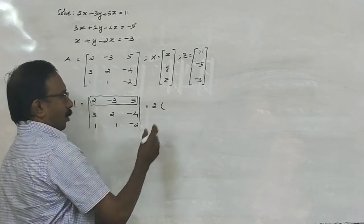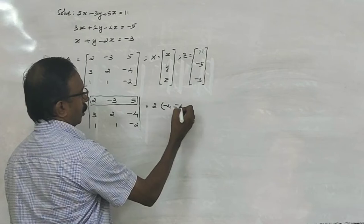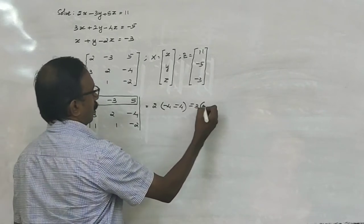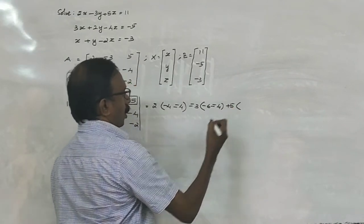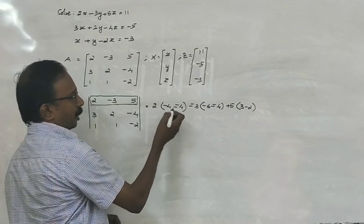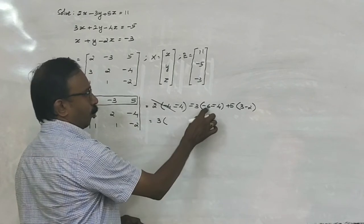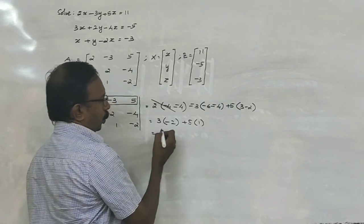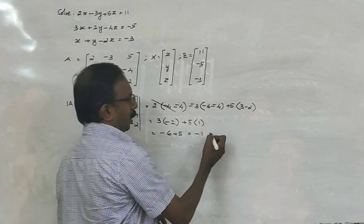And here the determinant can be expanded. So 2 times (minus 4 minus (minus 4)) minus (minus 3) times (minus 6 minus (minus 4)) plus 5 times (3 minus 2). This becomes: minus 4 plus 4 is 0, negative times negative is positive, so minus 6 plus 4 is minus 2, plus 5 times 1 equals 1. Therefore minus 2 plus 5 is 3. The determinant equals 3.